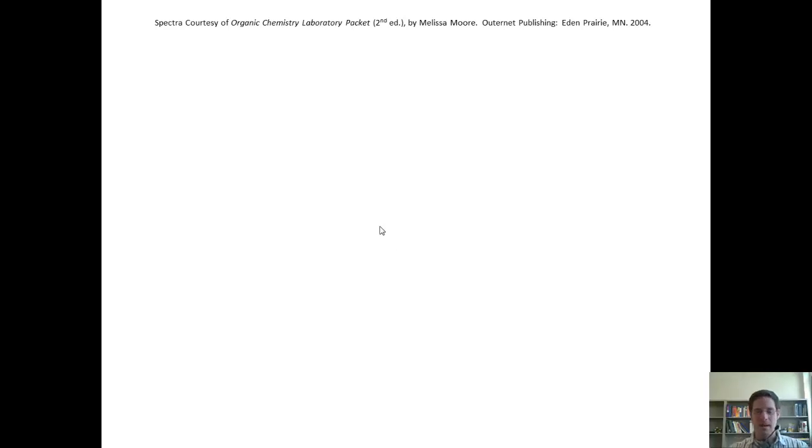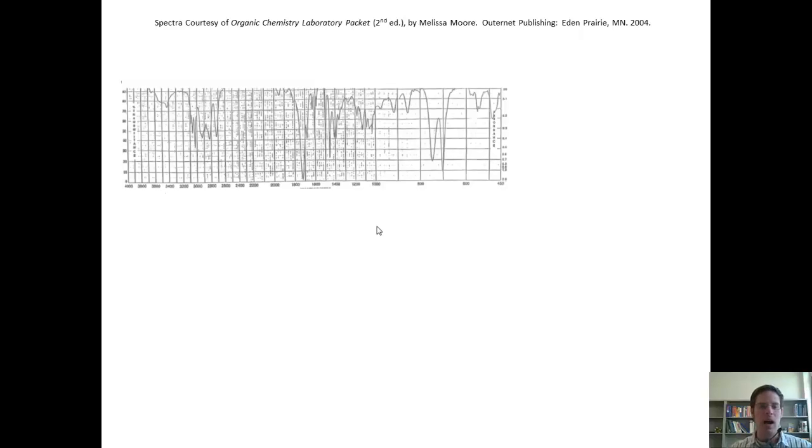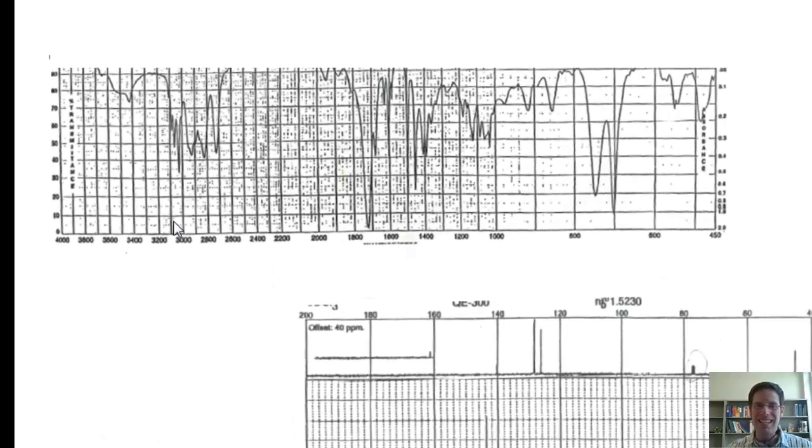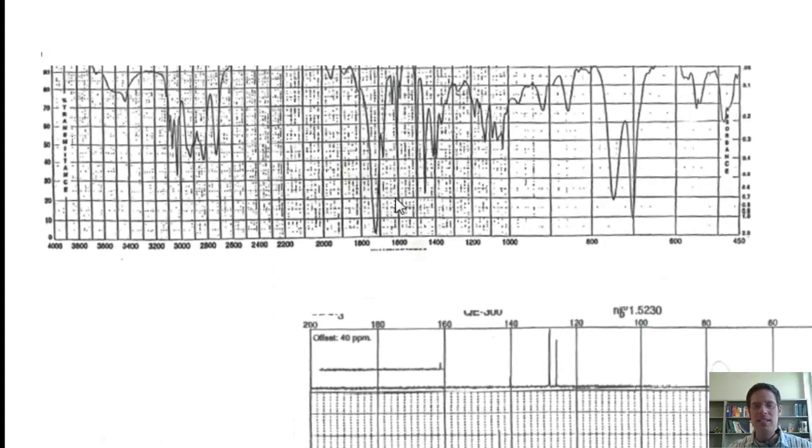So let's do some examples. Let's say that I've got a compound who gives the following IR, C13, and H NMR data. Now if I'm trying to deduce its structure, where do I begin? I of course begin with step one. Step one from Mike's list of steps is look at the IR and try to figure out, does this compound have a carbonyl or an OH?